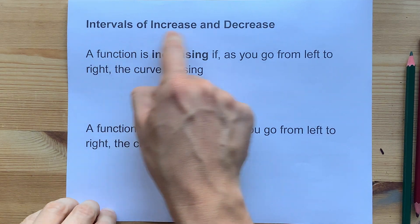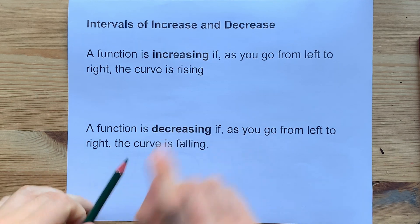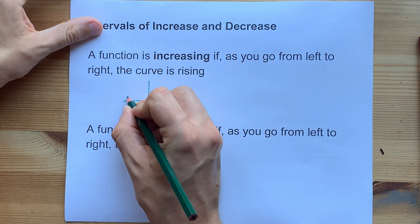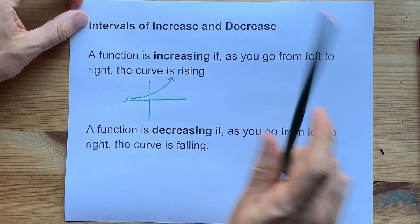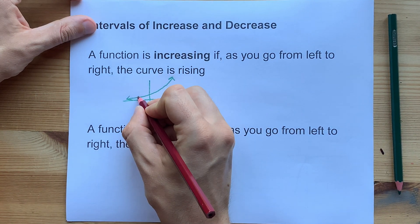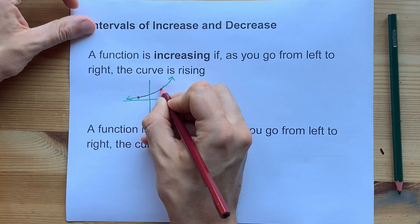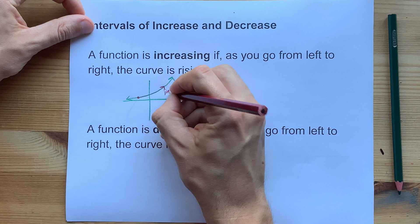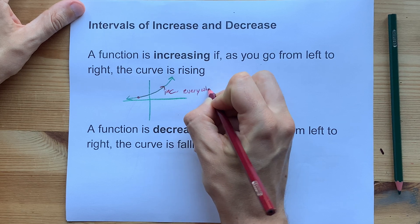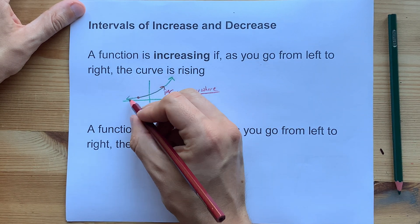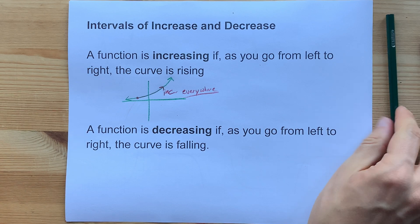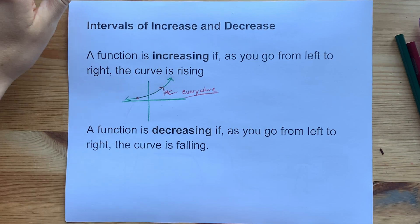Quick little definition for intervals of increase and decrease. A function is increasing if, as you go from left to right, the curve is rising. Exponential functions are a great example of this. If you were to trace along the curve at any point and move from left to right, your pencil is moving upward — that tells you it's an increasing function. This one is actually increasing everywhere. Sometimes, if it goes up and then comes down, we'll have to break it up into different intervals: here it's increasing, there it's decreasing.